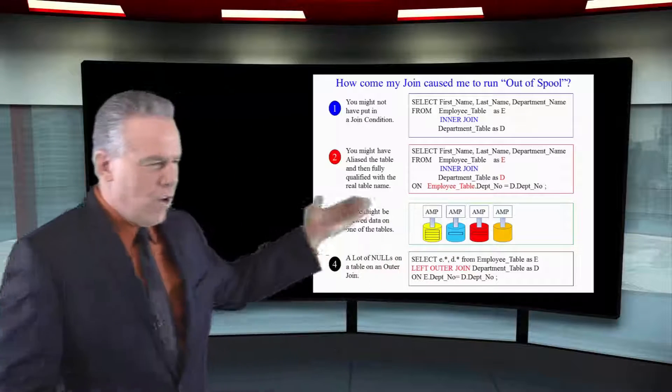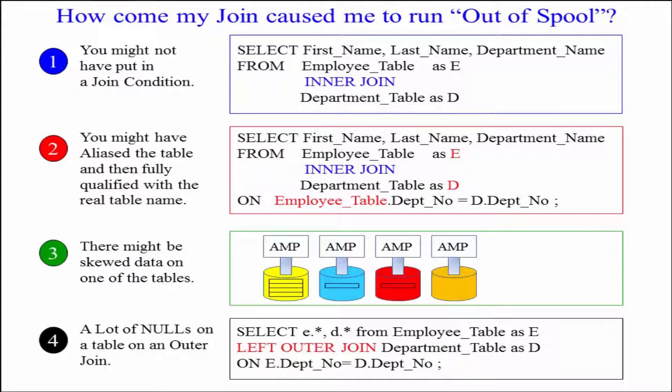Sometimes you'll even go out there and alias a join and then not fully qualify it in some places and use the table name and you'll actually run out of spool because it thinks there's three tables now. I called it E and then I went back and referred to it as employee table, as you can see in this example.